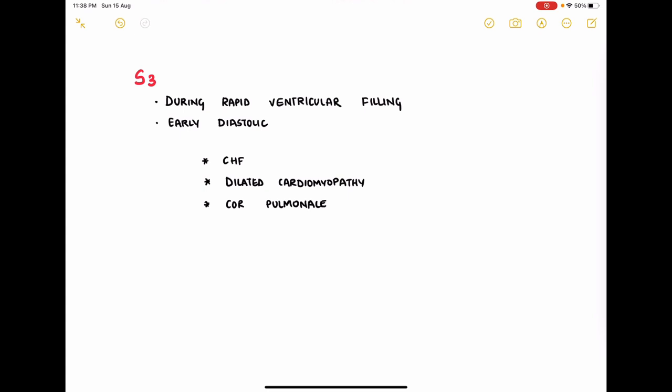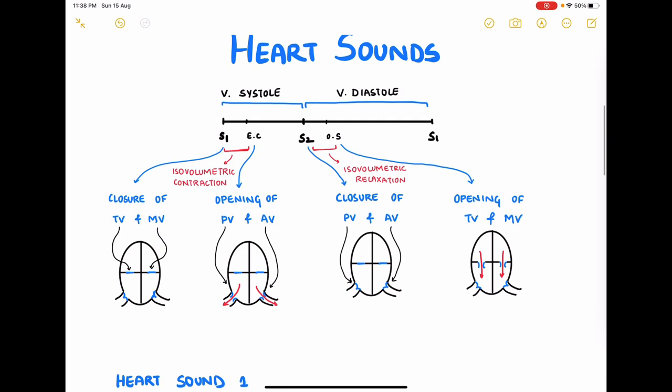Let's wind up this discussion by discussing the S3 and S4. S3 is heard during the rapid ventricular filling phase that is passive ventricular filling phase. So it is an early diastolic sound. It is seen in congestive heart failure, dilated cardiomyopathy and cor pulmonale. Let's locate this on this diagram that we have drawn. So somewhere here, early diastolic sound.